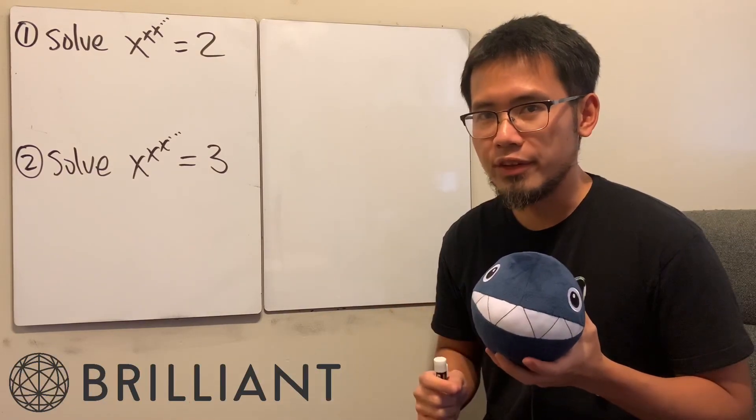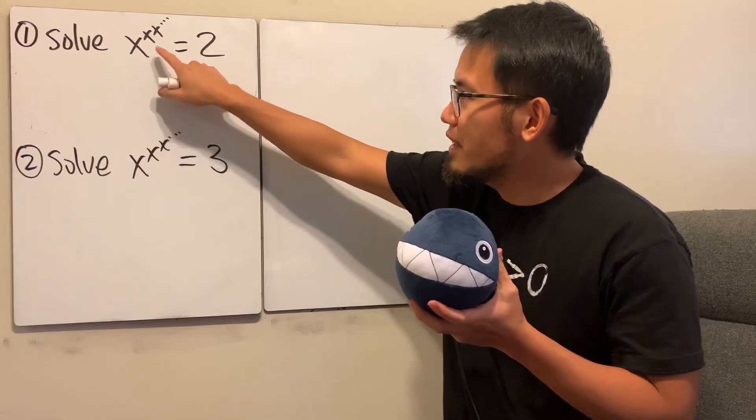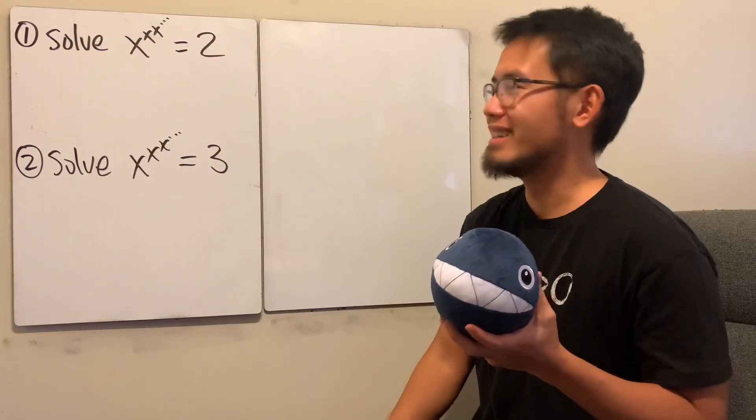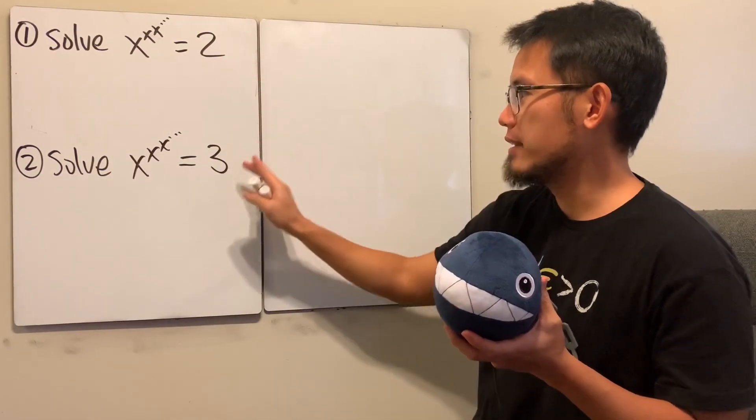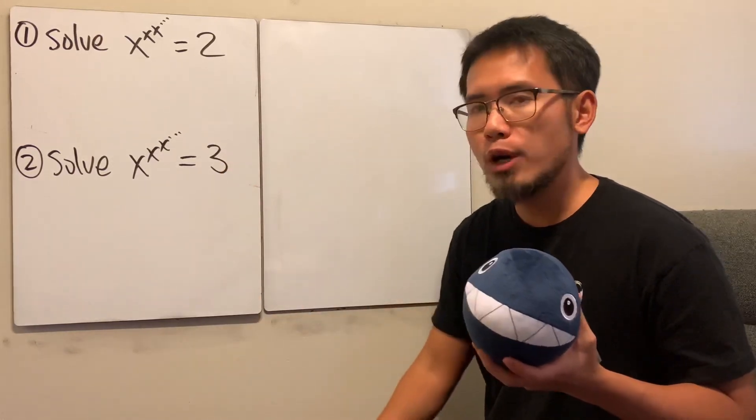Hello, welcome back. This is just a continuation from the previous video. As you can see, this time we have infinitely many x's, and this is still equal to 2, and this is equal to 3. Do you think we can use the same method to solve both of these equations?